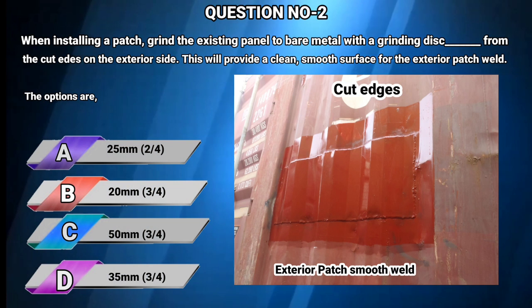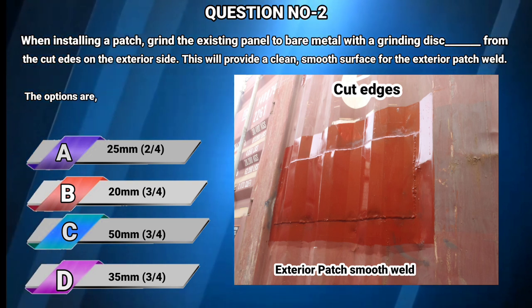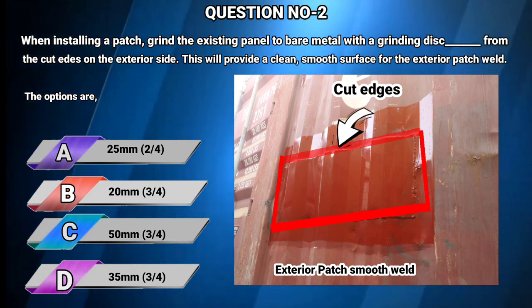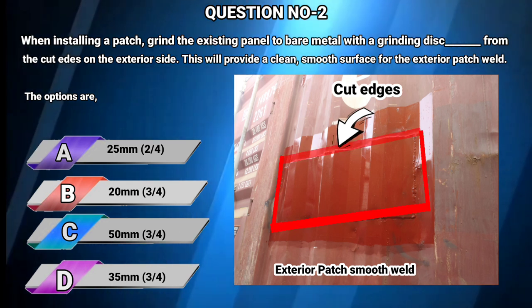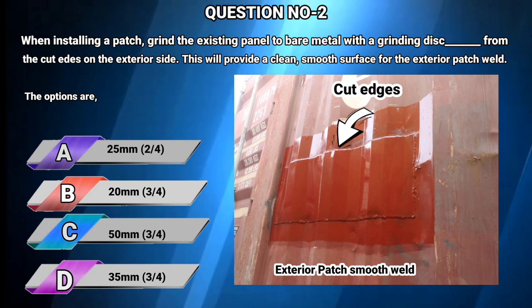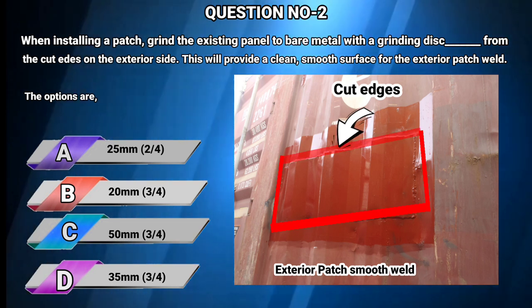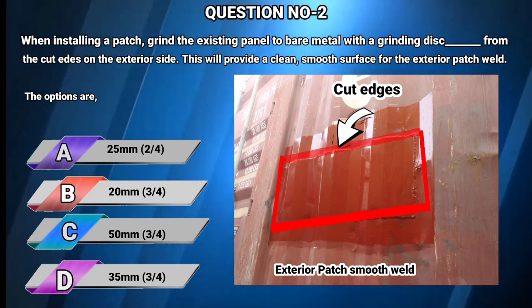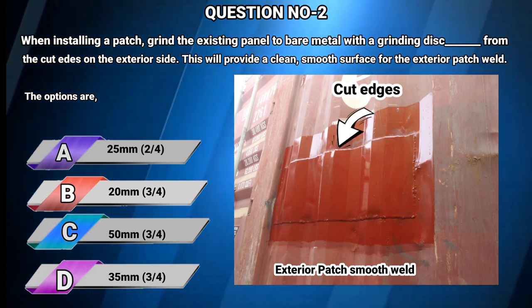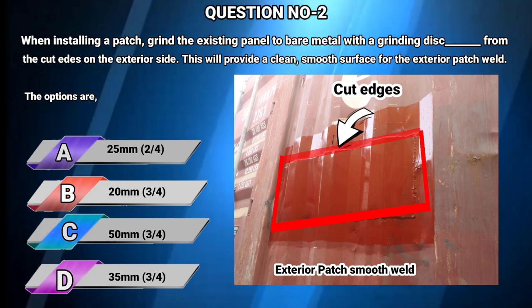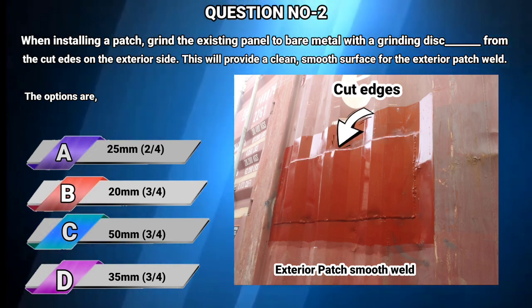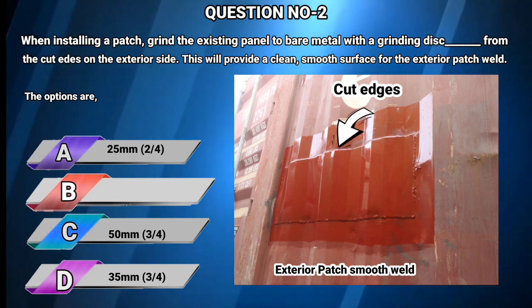Question number 2: When installing a patch, grind the existing panel to bare metal with a grinding disc from the cut edges on the exterior side. This will provide a clean, smooth surface for the exterior patch weld. Options: A) 25 mm, B) 20 mm, C) 50 mm, D) 35 mm. The answer is B: 20 mm.